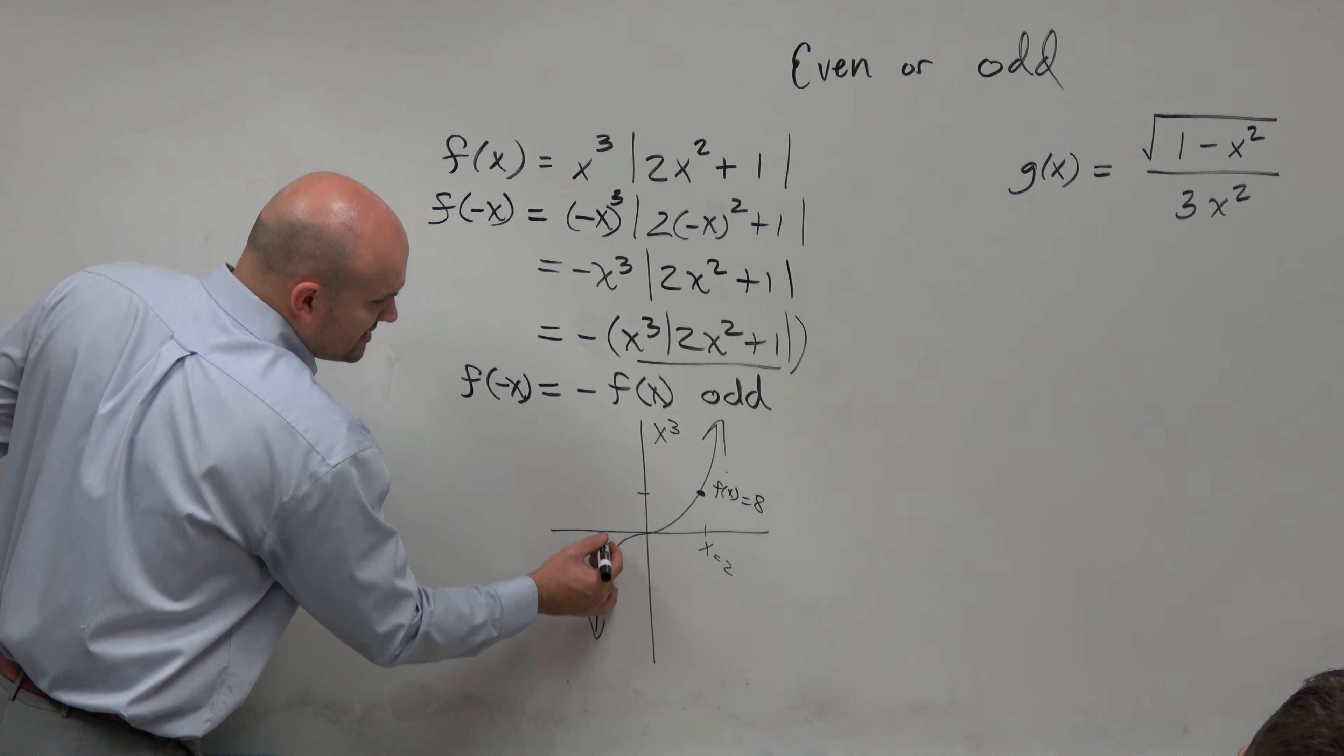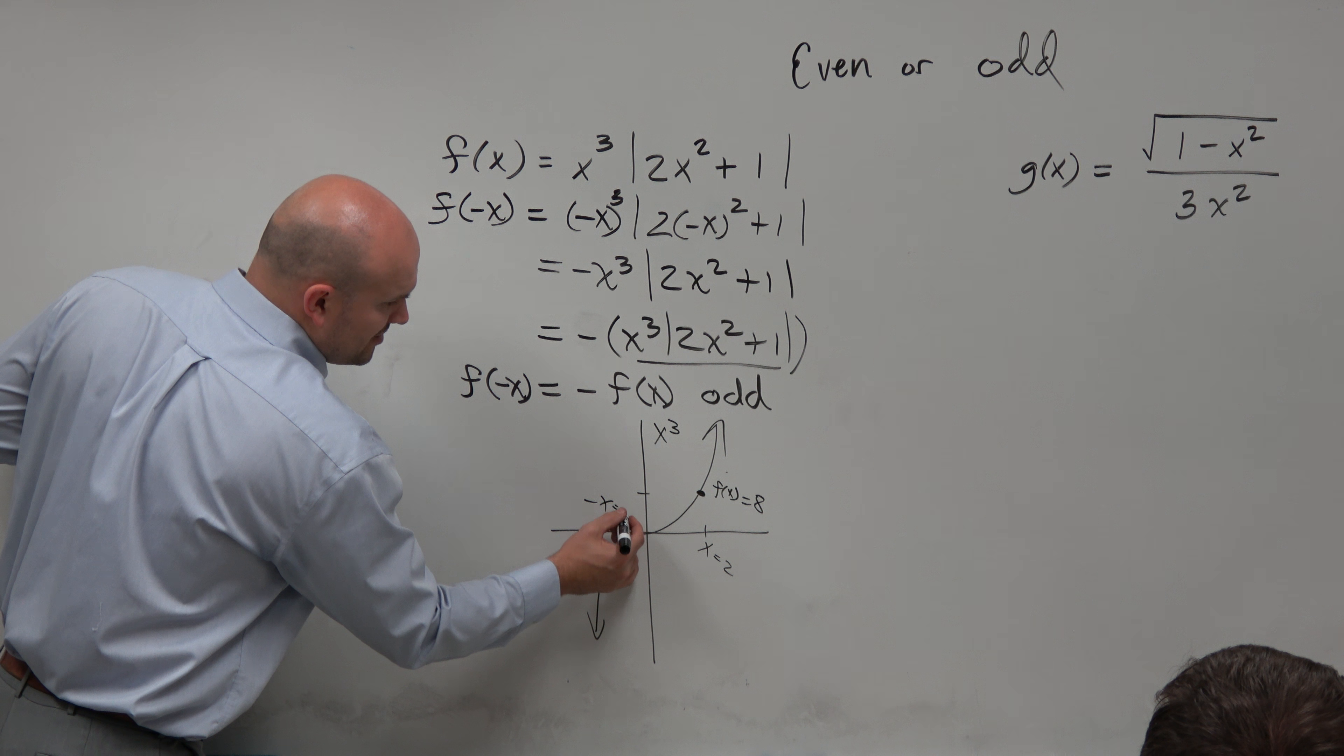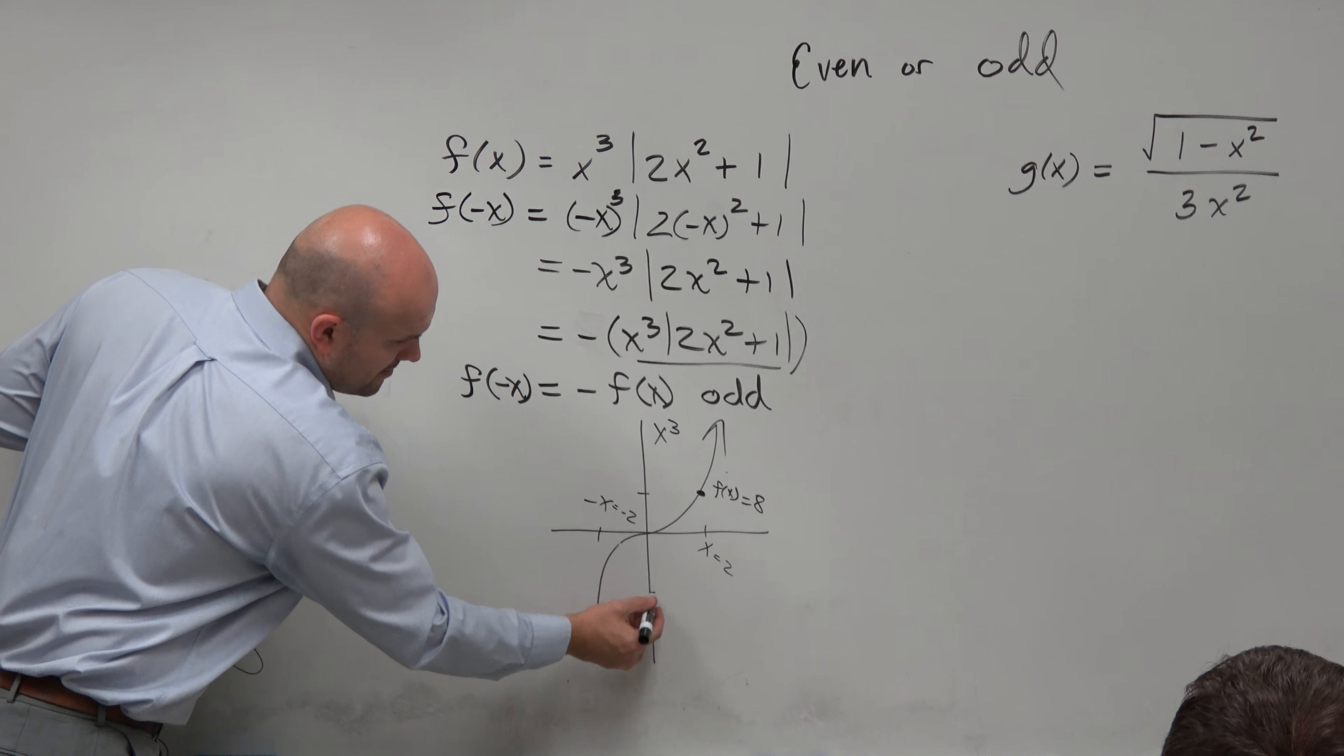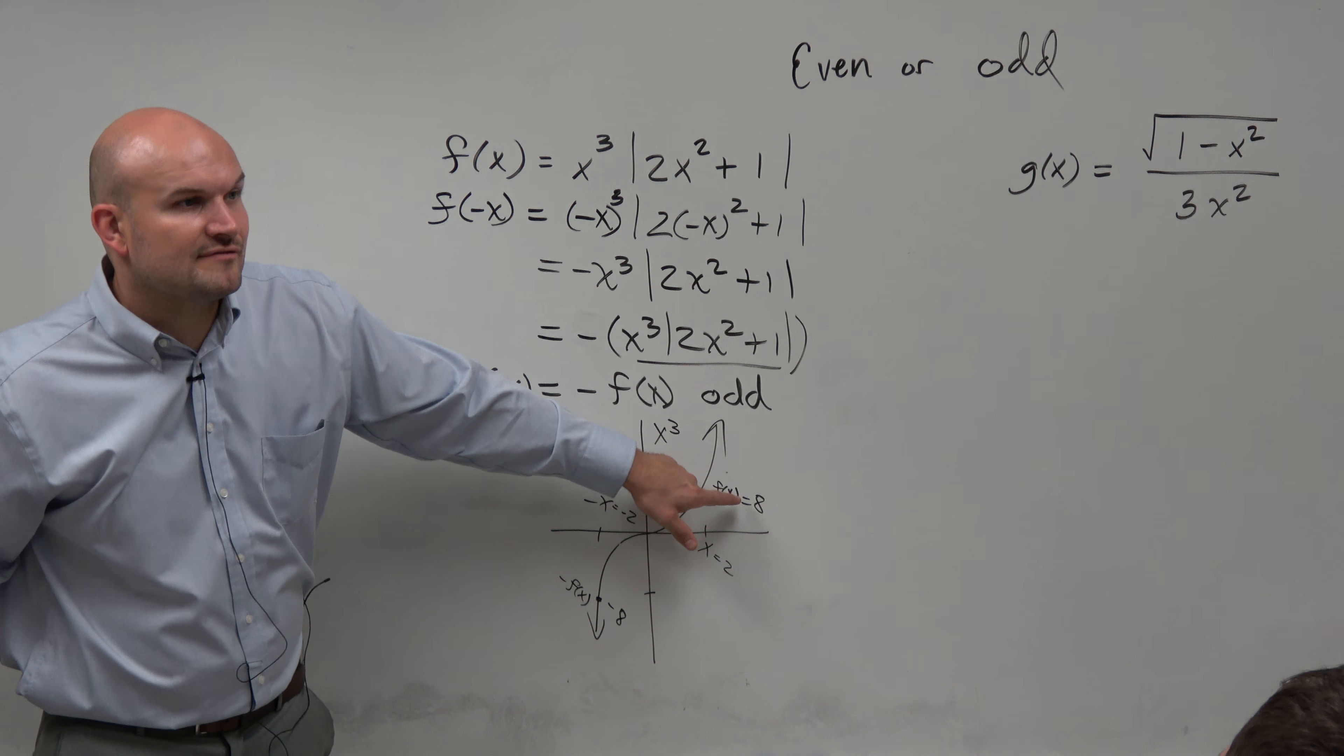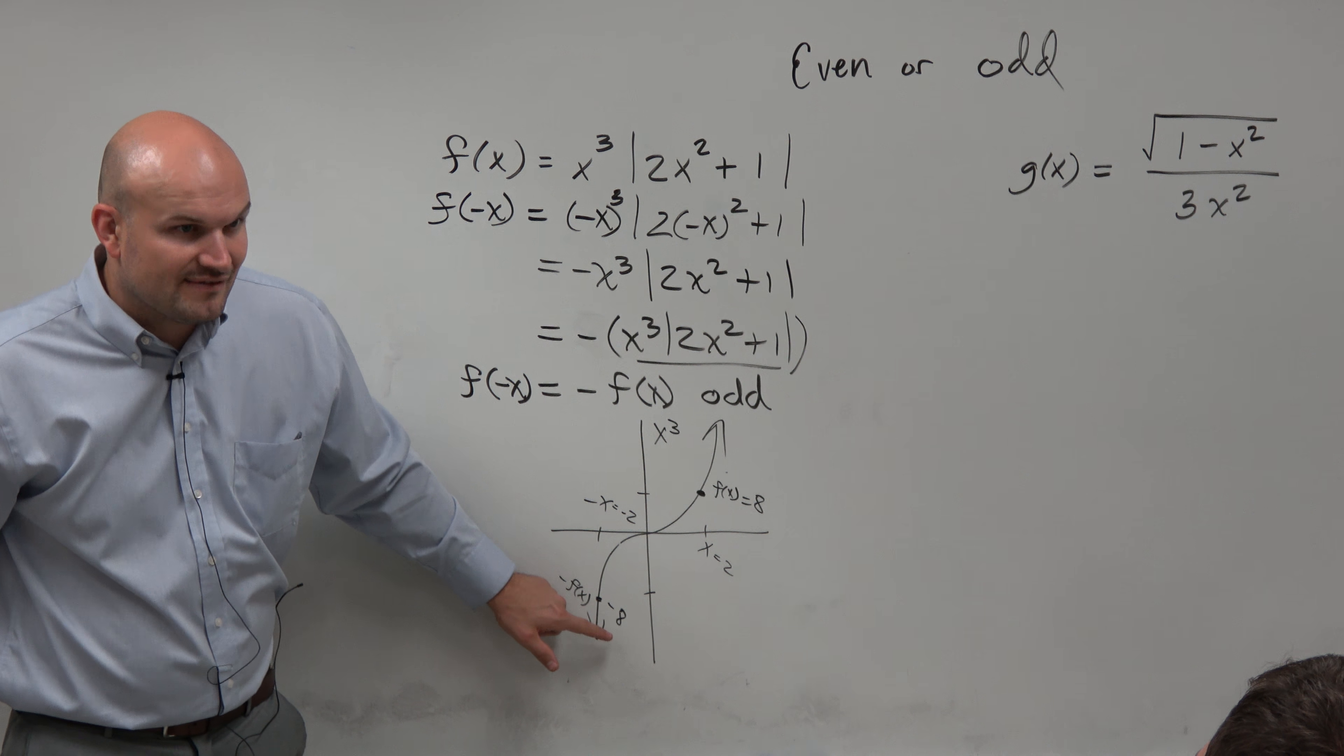Now, what if we plugged in opposite of x, which in this case would be negative 2? If you plug in negative 2, negative 2 cubed is negative 8 or the opposite of f of x. If f of x is 8, the opposite of f of x is negative 8.